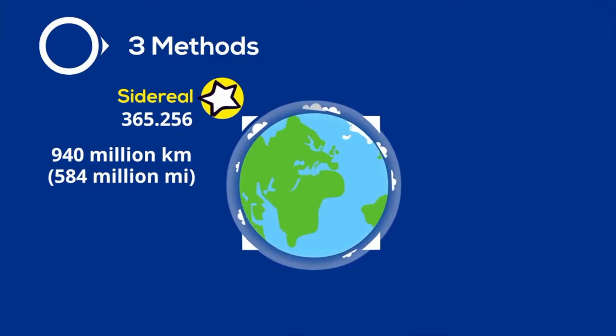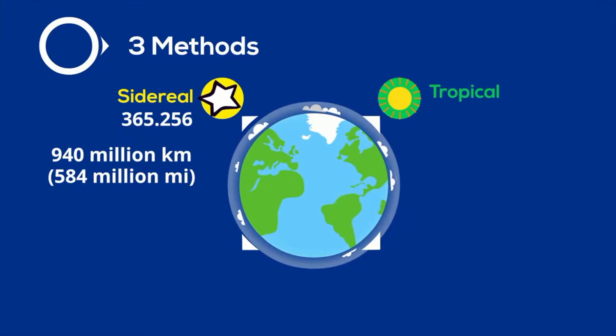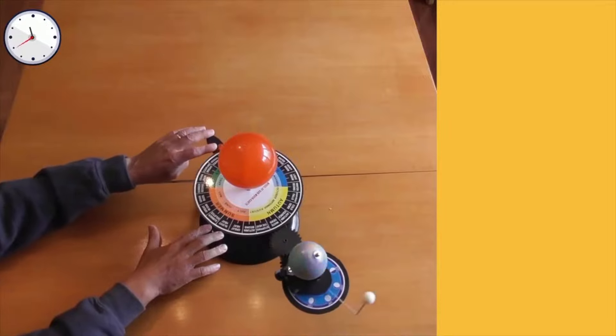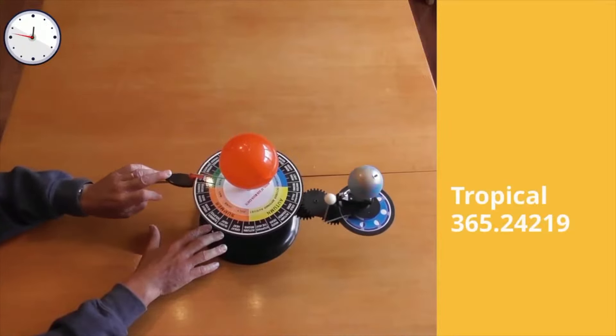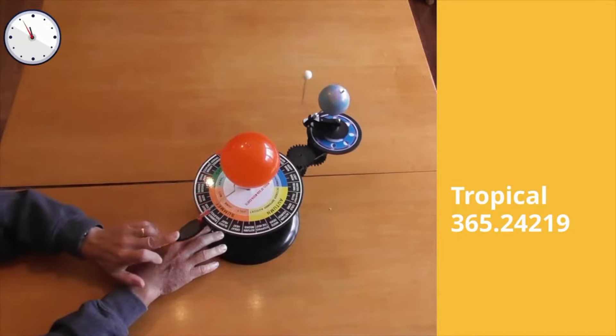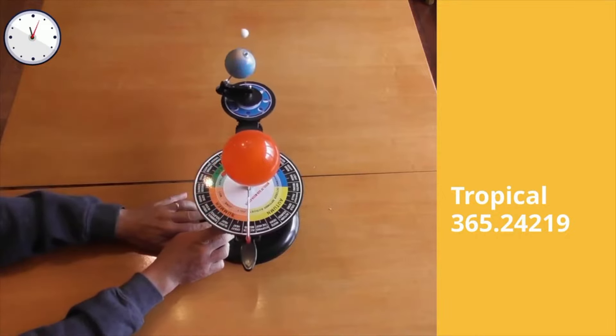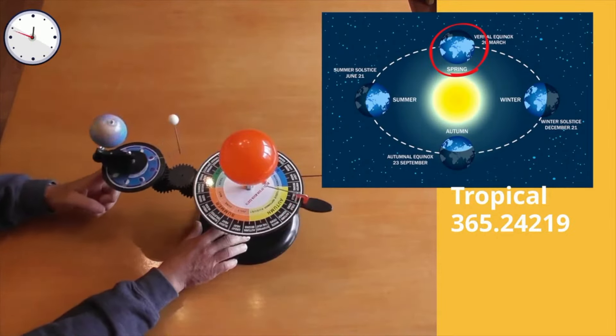It measures a complete revolution around the Sun compared to the stars behind the Earth. Another method is called the tropical method. A tropical year is 365.24219 days, and it is the time from one vernal equinox to the next.